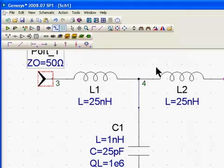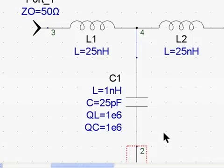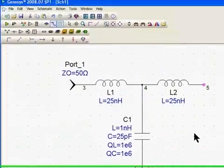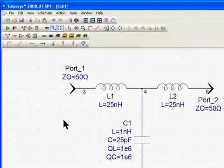We also have shortcuts, which is a lot easier. If I want to place a ground, I just hit G on the keyboard and I can place a ground. And then O is an output port. So now we've created our schematic and completed it.